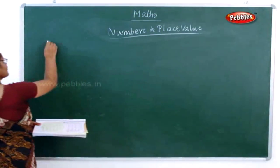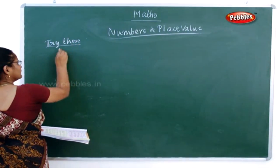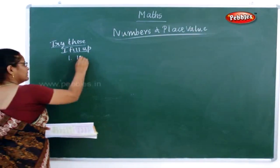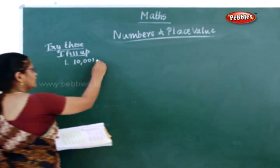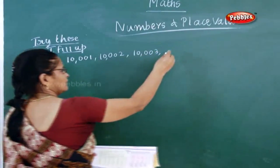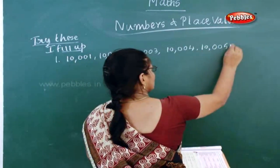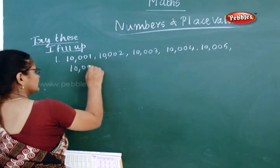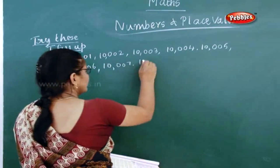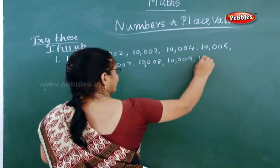Next one, try this. In that first question, fill up. First one is fill up. In that number one: ten thousand one, ten thousand two, ten thousand three, ten thousand four, ten thousand five, ten thousand six, ten thousand seven, ten thousand eight, ten thousand nine, ten thousand ten.